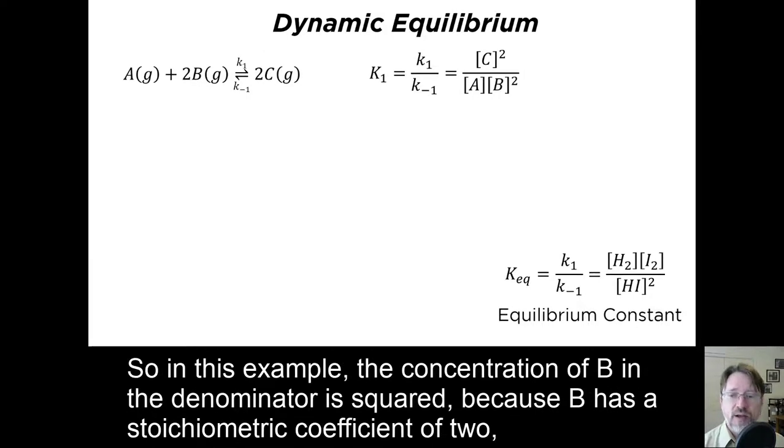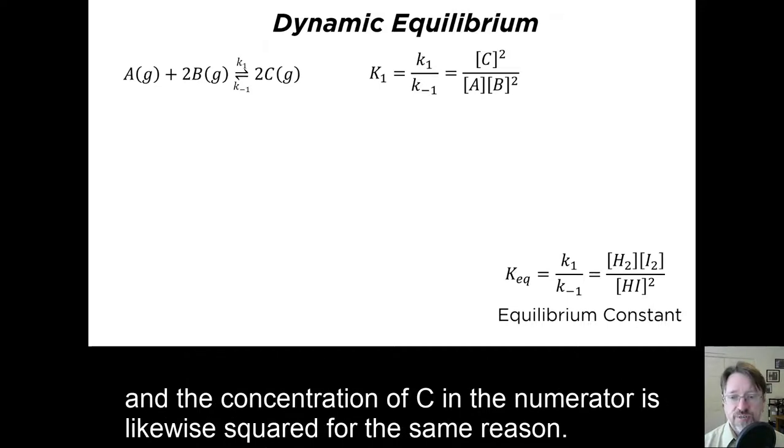So in this example, the concentration of B in the denominator is squared because B has a stoichiometric coefficient of 2, and the concentration of C in the numerator is likewise squared for the same reason.